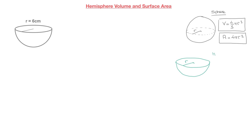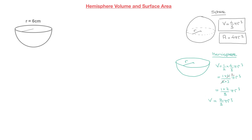So let's write that out under the heading 'hemisphere'. The volume equals one half times the volume of a sphere, so that's 1/2 × (4/3 π r³). Taking care of these two fractions being multiplied together, this is equal to (1×4)/(2×3) × π r³. The four on the numerator has a common factor of two with the denominator, so we replace the four by two, giving us (1×2)/3 × π r³. Since 1×2 is just 2, we obtain the formula for the volume of a hemisphere: V = 2/3 π r³.